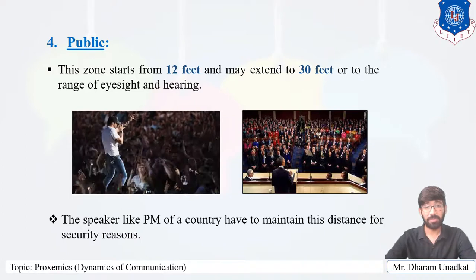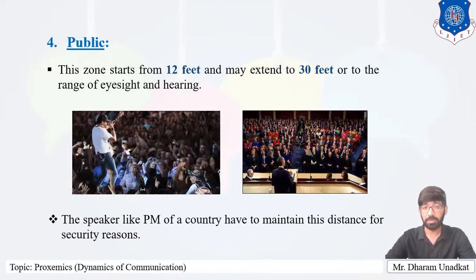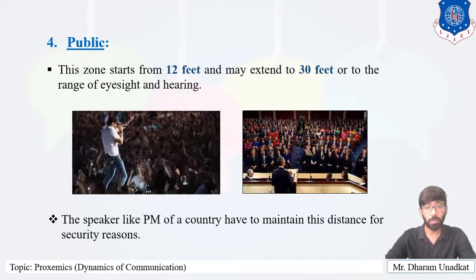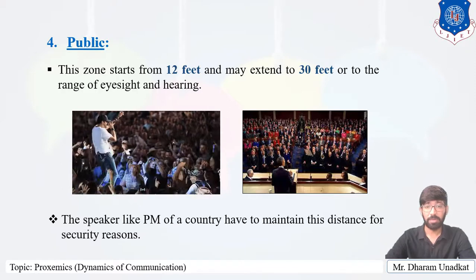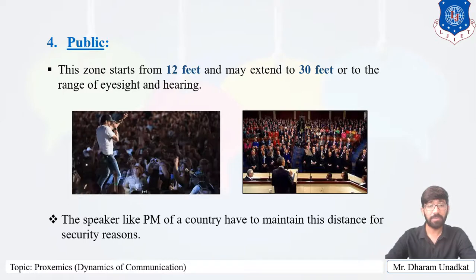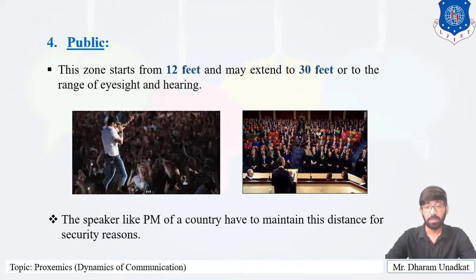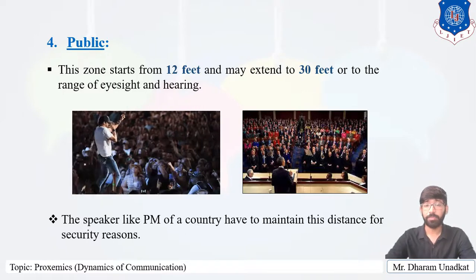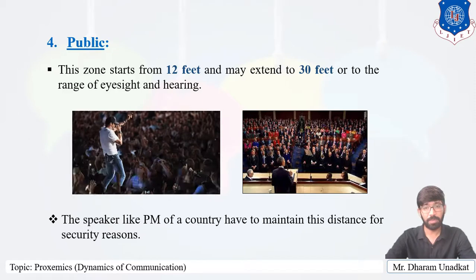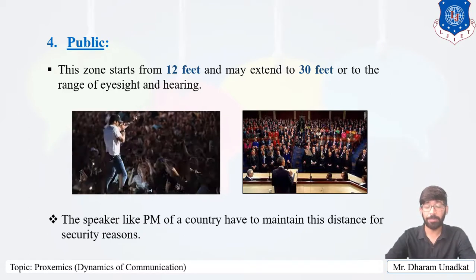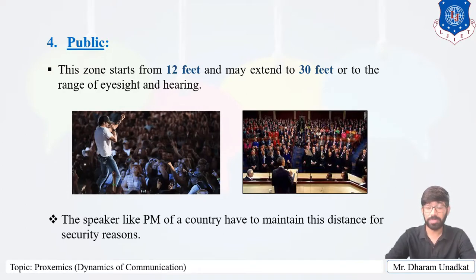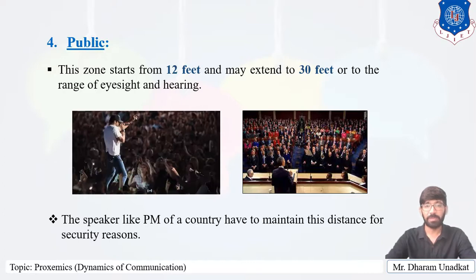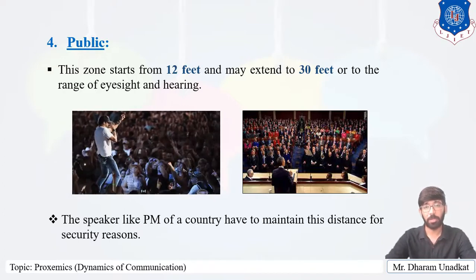The fourth zone is public, starting from 12 feet and extending to 30 feet or the range of eyesight and hearing. Events in this zone are formal, and the audience views what is happening as an impartial observer. The degree of detachment is very high and the audience is free to do as it pleases. The speaker has to raise their voice or use a microphone. Public figures like the prime minister maintain this distance for security reasons.